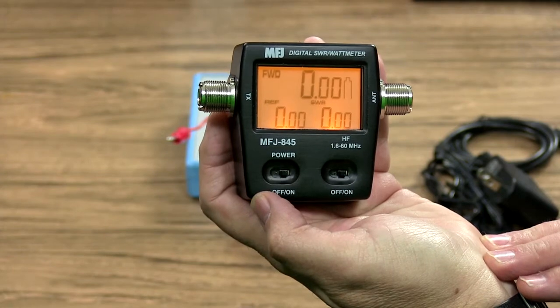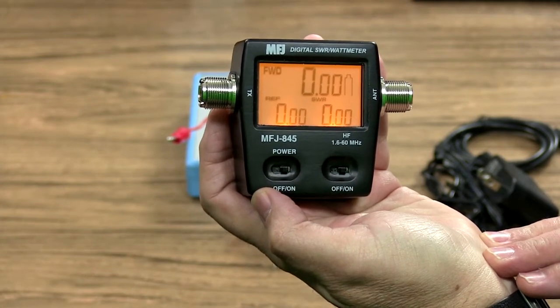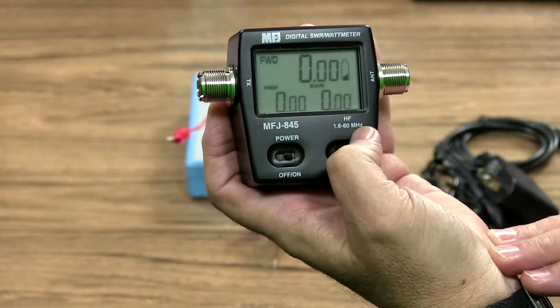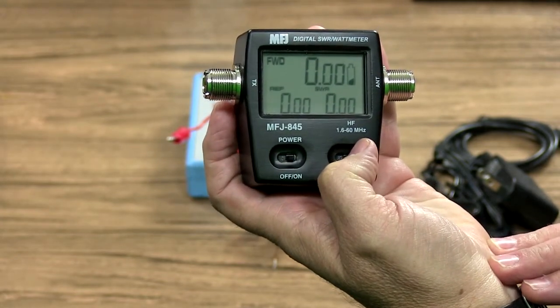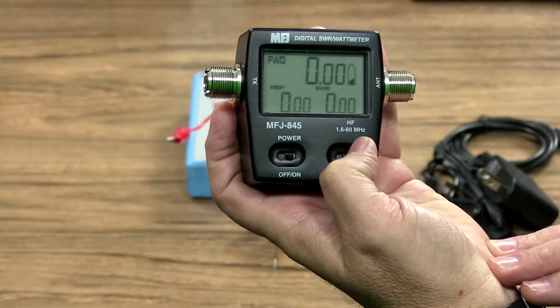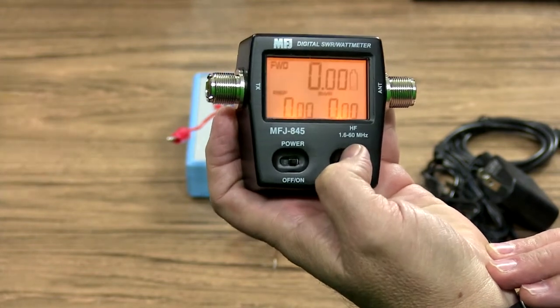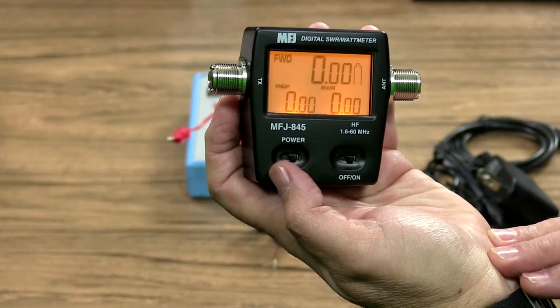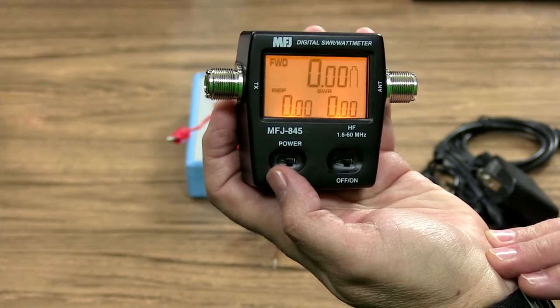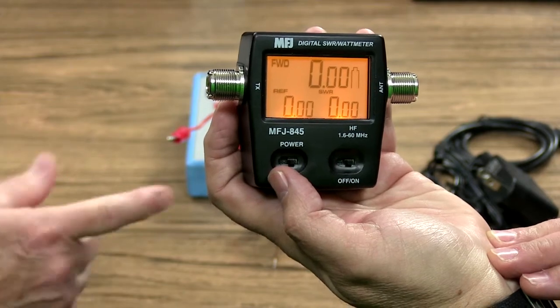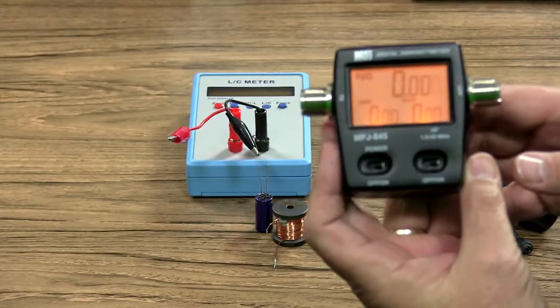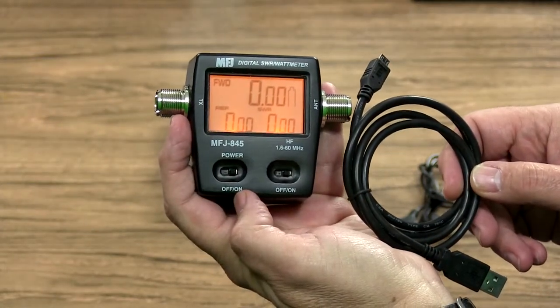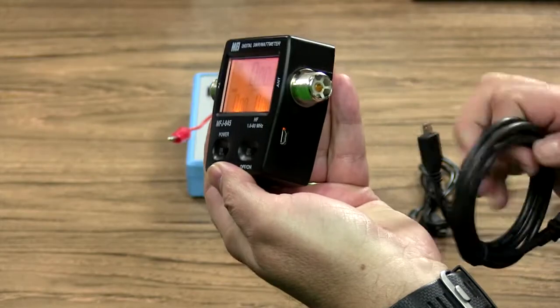The first one here is the new MFJ digital SWR watt meters that display forward, reflected power, SWR and battery life all in a single glance. It's got large half inch forward power digits and five eighths reflected and SWR digits. The LED screen is two and a half inches diagonally. It's got power on and off, backlight on and off switches and they've also got an included micro USB cable so you could power it off of USB power if you wanted to.